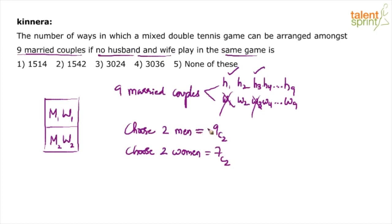You getting it? What is nine C two? Nine into eight by two. Thirty six. What is seven C two? Seven into six by two. Twenty one. So there are 36 ways of choosing two men and 21 ways of choosing two women.